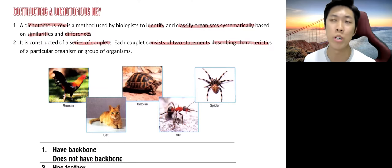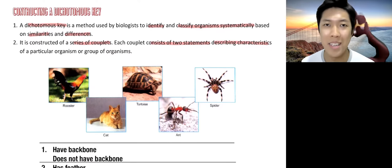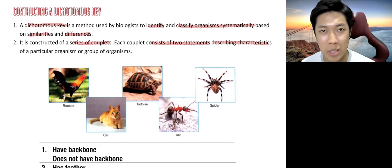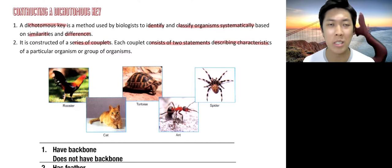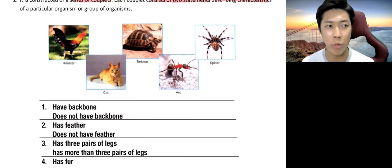So long story short, it is for us to categorize animals by asking couplets or a series of questions. So I have an example for you. Hope we can go through this together and you will get a better idea of how do we actually form a dichotomous key.